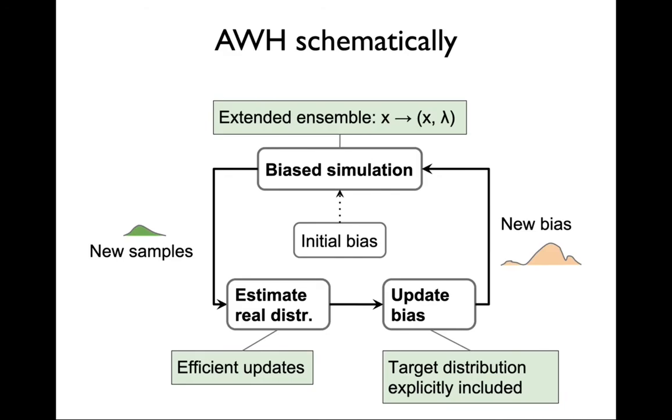How the method schematically works is that we extend the ensemble with reaction coordinates, can be one or multidimensional lambda, and then one runs a biased simulation for a short while. This provides new samples and then from that you can estimate what the real distribution is. Initially you have some initial bias which is usually zero, no bias at all, which is of course incorrect because there is some potential, some barrier that you want to remove. Looking at what bias you put in and what samples you get out you can estimate the real distribution. Then one can, having this information, update the bias, and here the target distribution is included explicitly, and then iterate around until you're happy with the convergence.